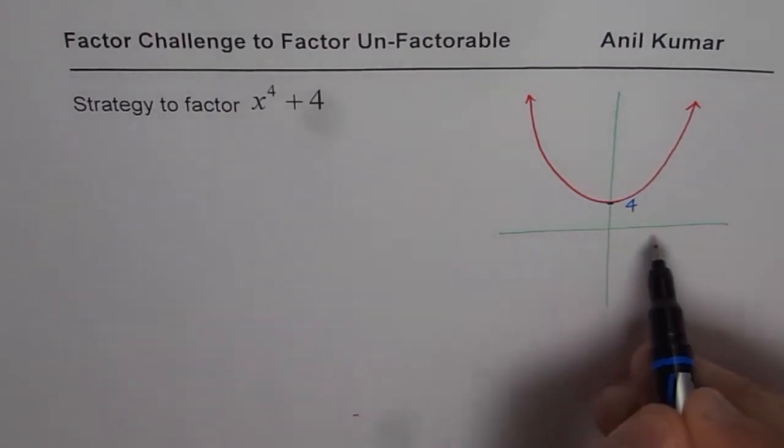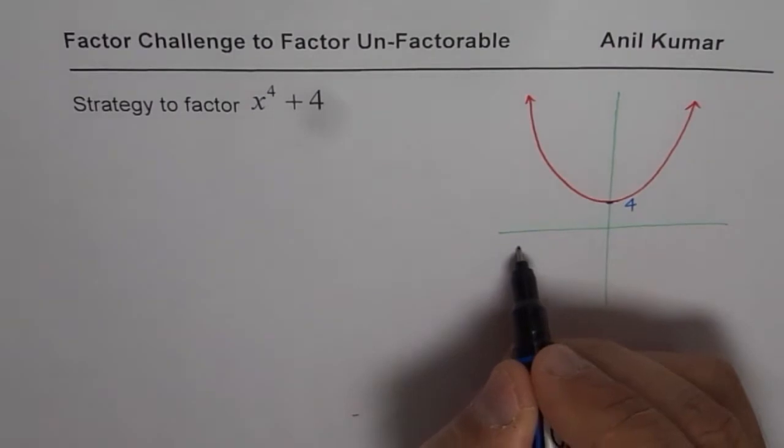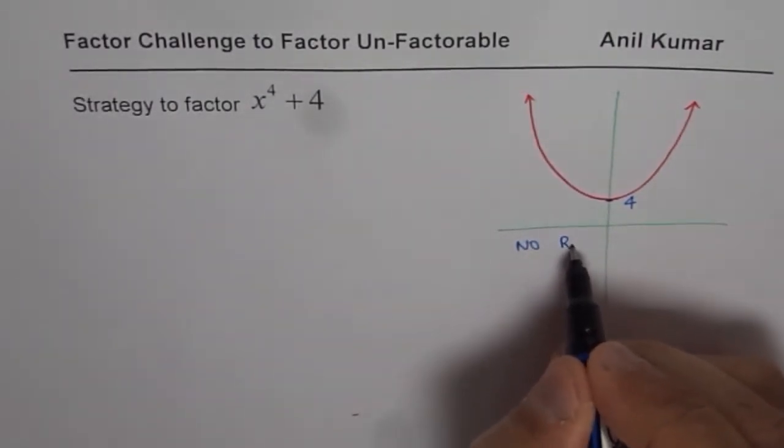Since there are no x-intercepts, we do not have any real zeros. So no real zeros.